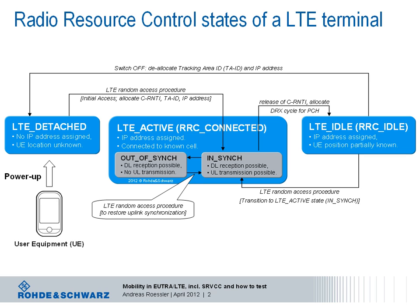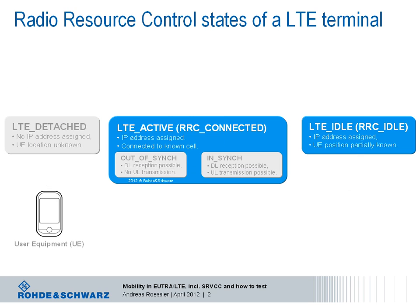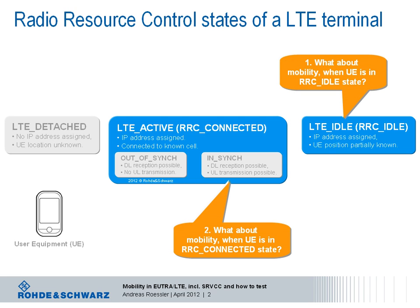The question is now what happens to mobility when the UE is either in RRC idle or RRC connected state. We need to discuss at least two aspects of LTE mobility. First, the device is in idle mode, camping on an LTE cell where the receiving quality might become worse — it needs to monitor neighboring cells or even other radio access technologies that the device supports. Second, the UE has an active connection with the LTE network, is receiving and/or transmitting data, and is leaving coverage of the serving cell or LTE coverage in general.